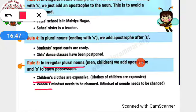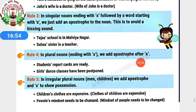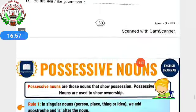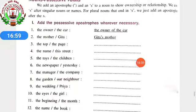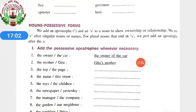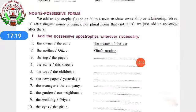People already means plural, but we put apostrophe s to show it is an irregular plural noun. These are the rules. Now I'll read the book work: we add an apostrophe and an s to a noun to show ownership or a relationship. We use apostrophe s after singular nouns or names. For plural nouns that end in s, we just add an apostrophe after the s. Two examples are given; the rest you have to do by yourself.